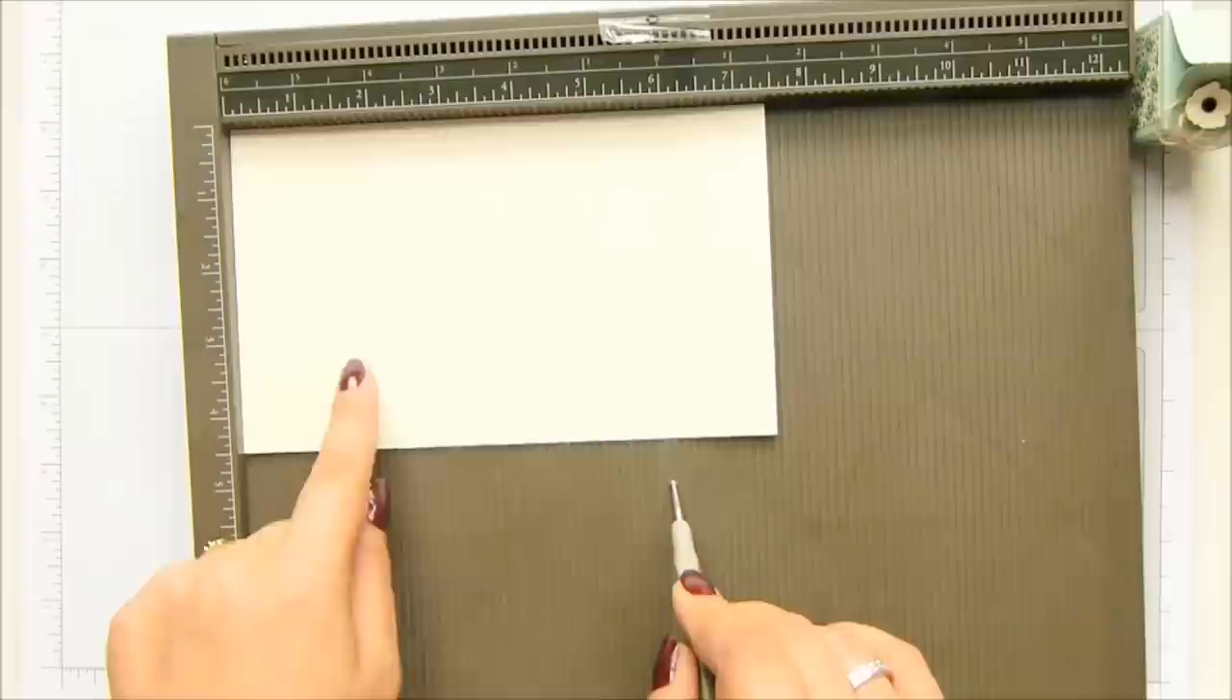And with the long side at the top, you score it at one and a half, three, four and a half, and six inches, which is four, eight, 12, and 16 centimeters. Turn it round and score it at one and a half and three, which again is four and eight centimeters.